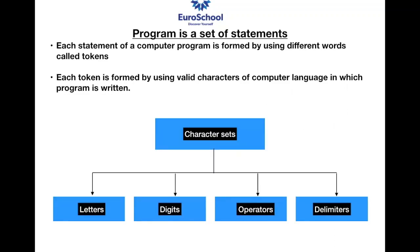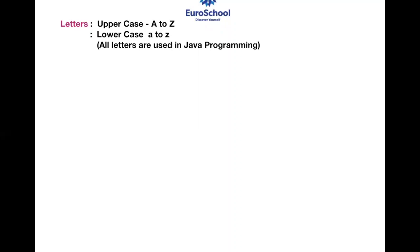A token is basically a set of characters. Now what does the character set have? It has letters, digits, operators, and delimiters. Letters means capital A to Z and small a to z. I have specifically noted capital A to Z and small a to z because in Java programming it is case sensitive. Capital A has a different meaning in the computer language and small a has a different meaning.